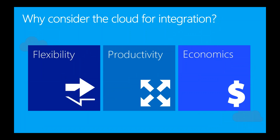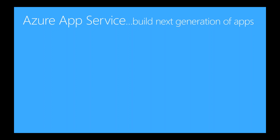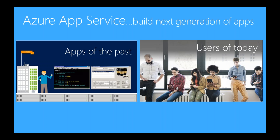When thinking about cloud integration, factors that play into decision-making include flexibility — the ability to turn things on and off — productivity, and taking advantage of out-of-the-box connectivity to all popular SaaS platforms. We also want to take advantage of economics and pay for what we're using, not paying for what we think we might use over three to five years. When building the next generation of applications, we need a platform that lends itself to a mobility cloud-first paradigm rather than monolithic client-server architectures.